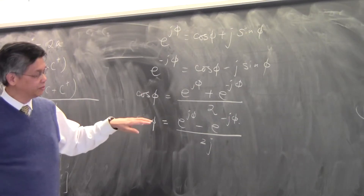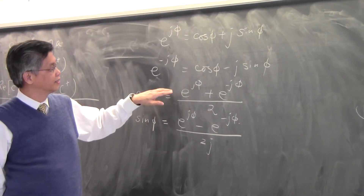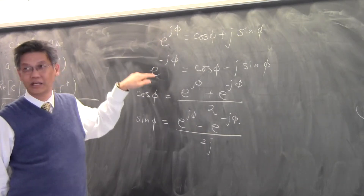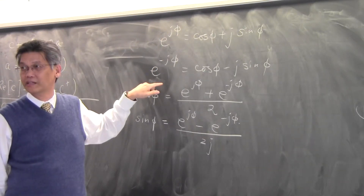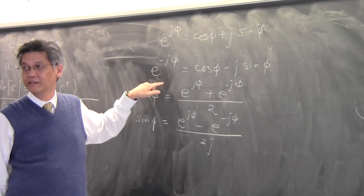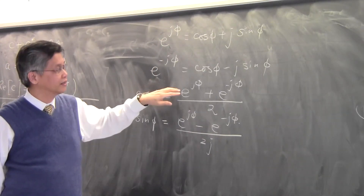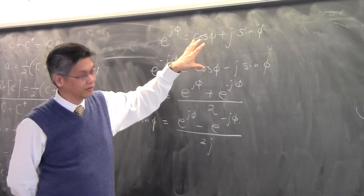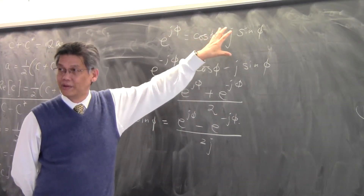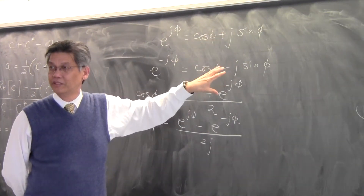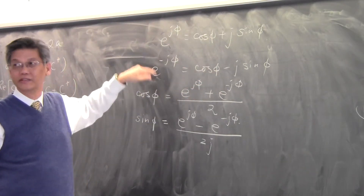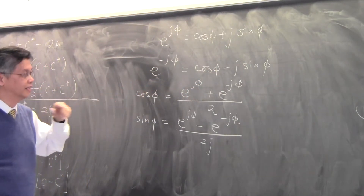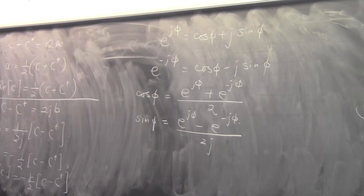If I apply the second formula, I get the imaginary part — which is sine φ — equals (e^(jφ) minus its complex conjugate) over 2j. Remember: taking the complex conjugate is the same as replacing j with minus j everywhere. The rigorous definition is to replace the imaginary part with a minus sign, but replacing j with minus j always works.